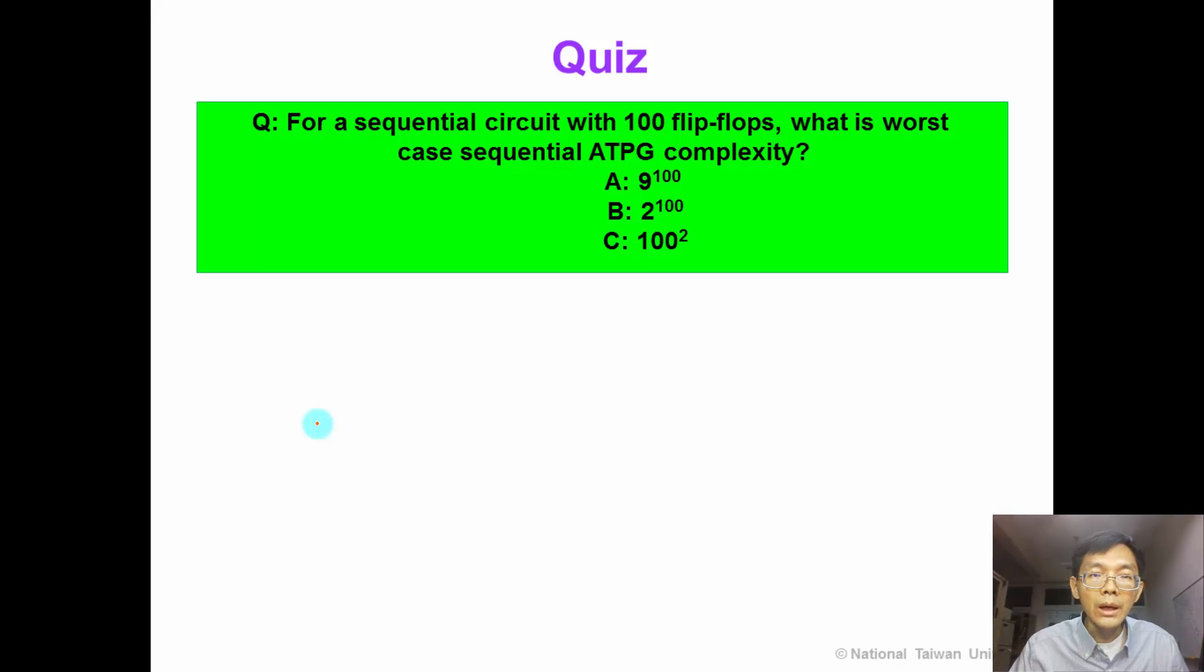Now we have a short quiz for you. For a very small sequential circuit with 100 flip-flops, what is the worst case ATPG complexity? A: 9 to the power of 100. B: 2 to the power of 100. C: 100 square. So what's your answer?